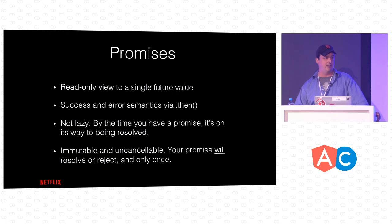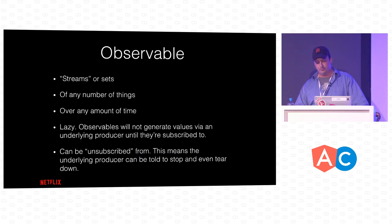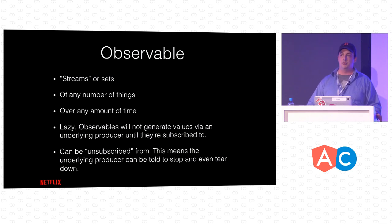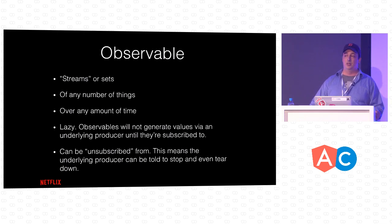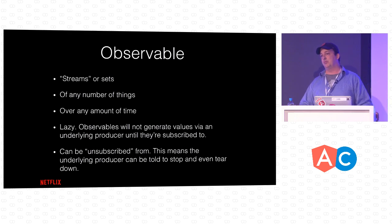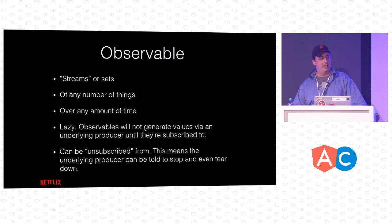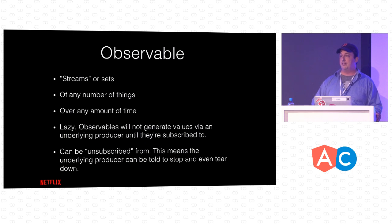An observable, on the other hand, is a stream — really a set of zero to N things over any amount of time. They're lazy: if you have an observable, nothing happens until you call subscribe on it. And they can be unsubscribed from, which tears down the producer that's giving you values. That's a powerful feature.